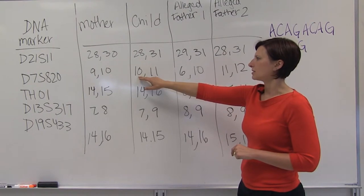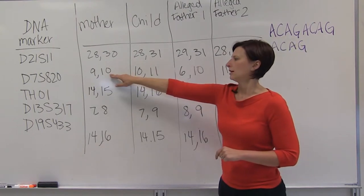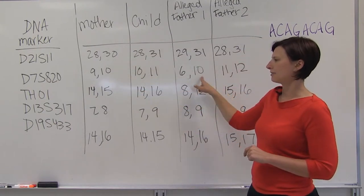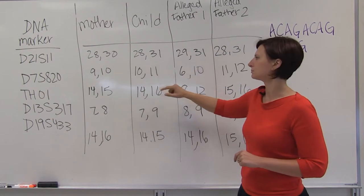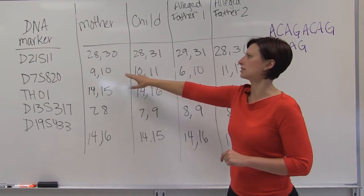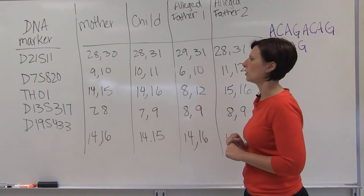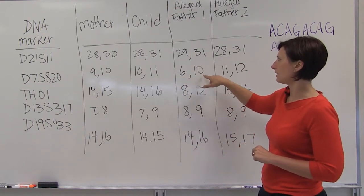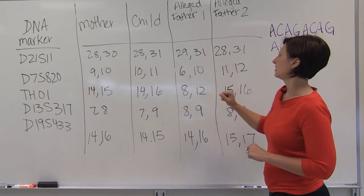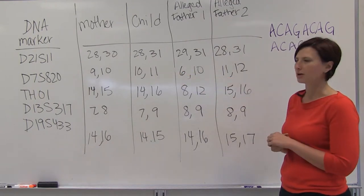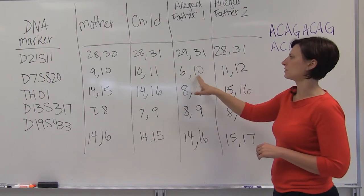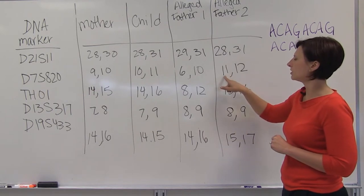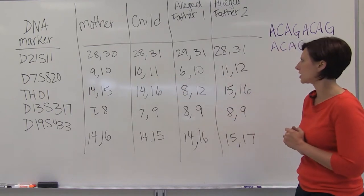The 10 that the child has has to have come from the mother. So this father can't have contributed the 10. That had to have come from the mother because it's the only one of the mother's alleles that the child has. So at this locus, alleged father 1 couldn't have contributed any of the child's genetic material. So we can rule out alleged father 1. Alleged father 2 could have contributed its 11 allele to the child.